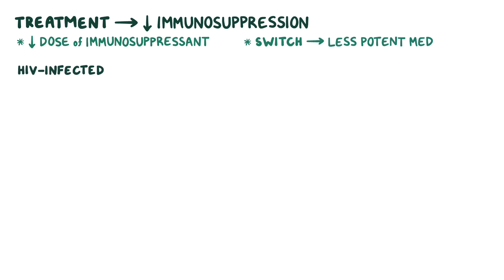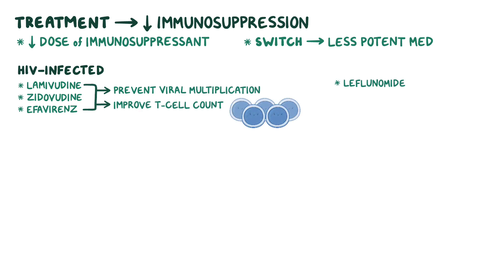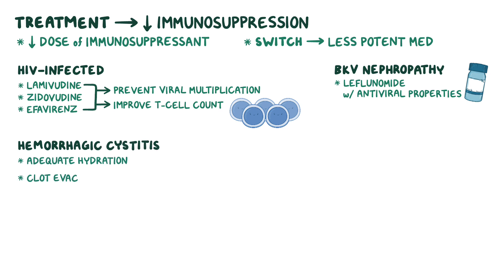The main goal of treatment is to reduce the immunosuppression either by reducing the dose of immunosuppressant used or by switching to a less potent medication. In HIV-infected individuals, antiretroviral medications like lamivudine, zidovudine, and efavirenz are used to prevent viral multiplication and improve T-cell count. Leflunomide, which is an immunosuppressive medication with some antiviral properties, can be used in the case of BKV nephropathy. Treatment of hemorrhagic cystitis involves providing adequate hydration, clot evacuation by placing a catheter into the urethra, and flushing the bladder with water or sodium chloride solution to break up the clot.